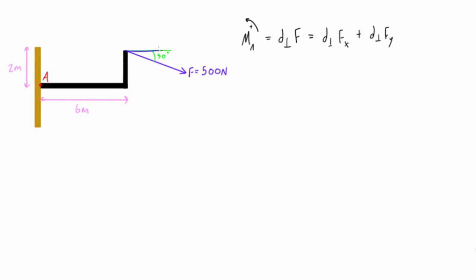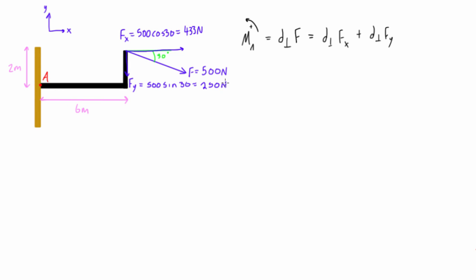We draw on our components: fx horizontally and fy vertically. With our coordinate axis for reference, fx equals 500 times cos 30, which works out to 433 Newtons, and fy equals 500 times sin 30, which works out to 250 Newtons. Those are the magnitudes; the directions are as shown.